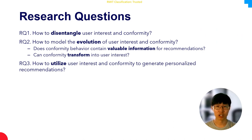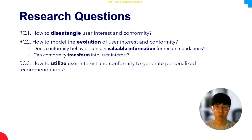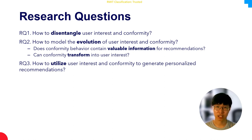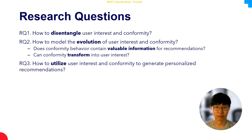This phenomenon got our attention and led to our research questions. Conformity bias is widely observed in recommender systems. We wonder how to disentangle and utilize both interest and conformity for recommendations, whether conformity contains valuable information and if it can transform into users' interest. Finally, we want to model the evolution of user interest and conformity and produce better recommendations.